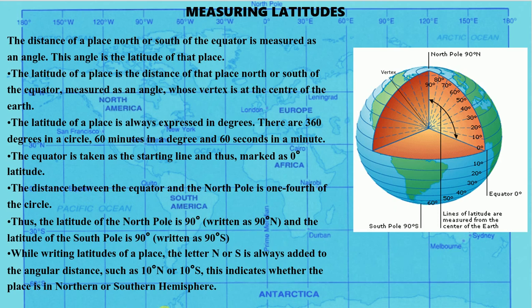While writing the latitude of a place, the letter N or S is always added to the angular distance. If we are writing 10 degrees to the north of the equator, we write it as 10 degree N. If we are indicating 10 degrees to the south of the equator, we write 10 degree S. This indicates whether the place is in the Northern Hemisphere or the Southern Hemisphere. In the next video, we will be reading about meridians, the heat zones, how to measure longitudes, and how to locate places on the globe. Thank you and have a nice day — do see the video again so that you will get a clear picture of the chapter.